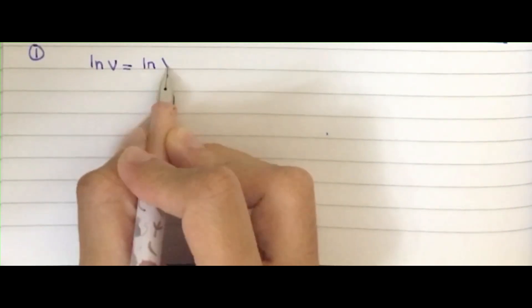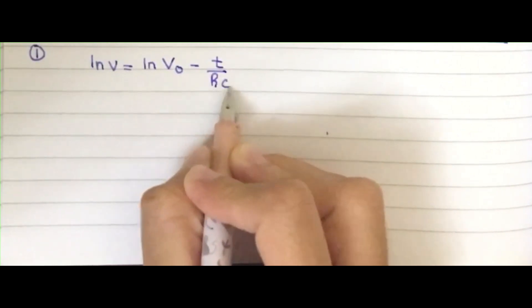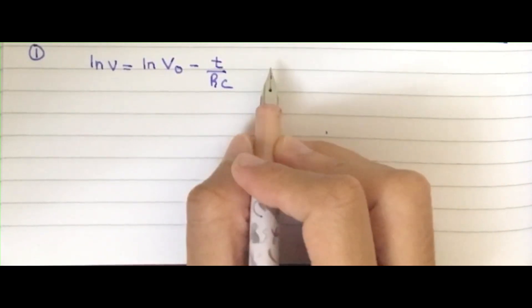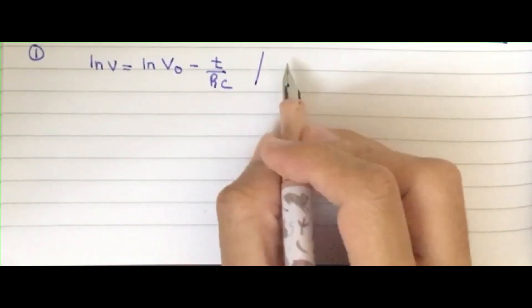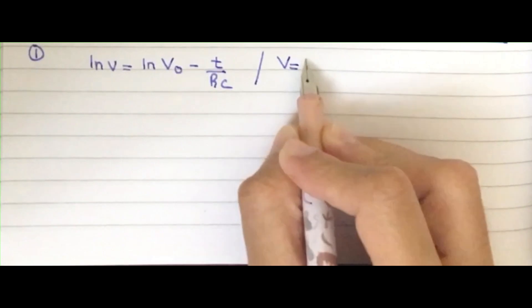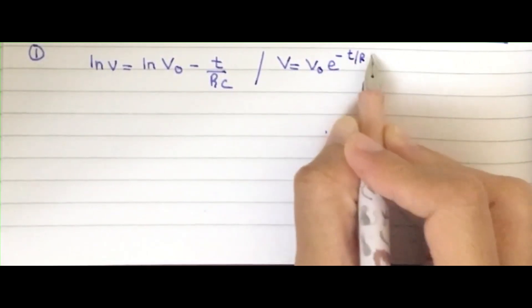Determine the resistance in the circuit when the switch was at position Y. There are two ways to do it. I'm going to do the first way in this video and the second way in the next video. The first way we can use the formula ln V equals ln V₀ minus t by RC. This is used for capacitors, or you can use V equals V₀ e to the minus t by RC.